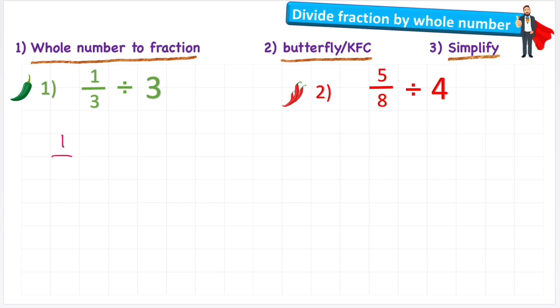Let's have a look at question one. One third divided by three. And my first step said to convert this three into a fraction. And I can do that by just simply putting it over one. Three over one has the same value as just saying three.